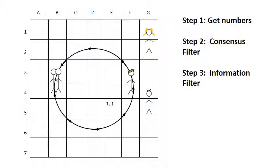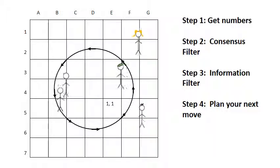Step 3 is called the information filter, but it doesn't apply yet either, since that was your first time at E5. Finally, step 4: Plan your next move. If you had more information about the floor, you could plan based on that. Since you don't, you decide to try to follow the circle by going to F3. You take a step, and the floor moves.